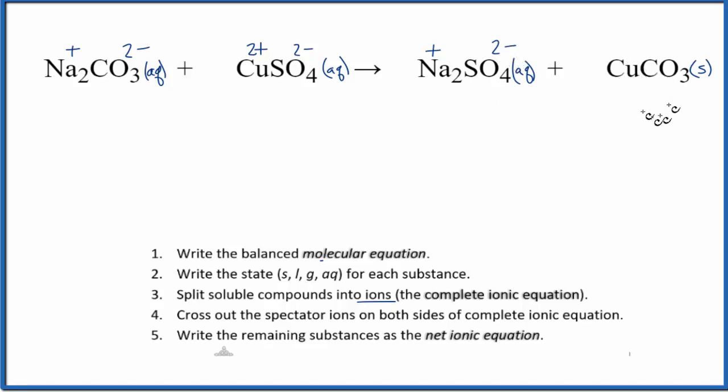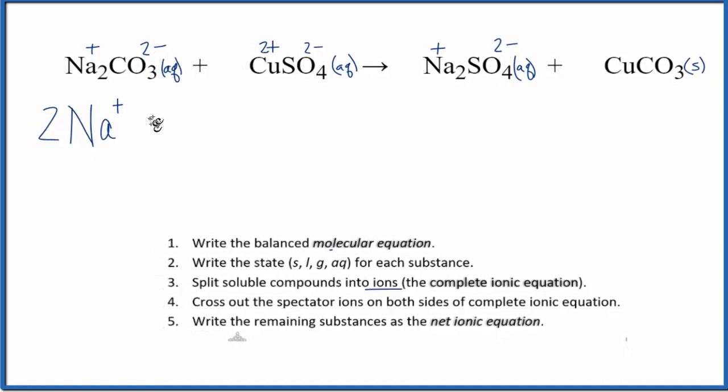The copper 2 carbonate, we don't split that up. It's a solid, so it stays together in this reaction. So we have the ions, and now we can split them up. So we have Na plus, and we have 2 of those right there. So we'll put a 2 in front of that. Plus the carbonate ion, that's CO3, 2 minus, plus the copper 2 ion, Cu2 plus, and then we have SO4, 2 minus, that's sulfate ion. So these are the reactants in our net ionic equation.